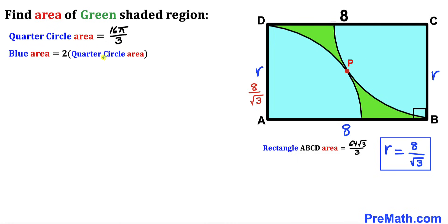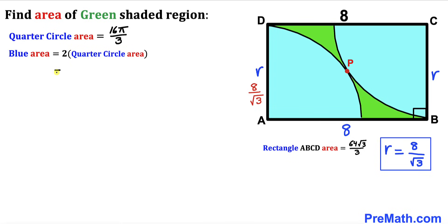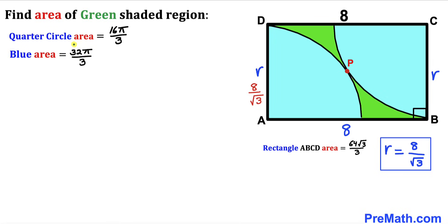The blue region area equals 2 times the area of one quarter circle. Since each quarter circle has area 16π/3, the blue region area is 2 × (16π/3) = 32π/3. So the blue region area is 32π/3.